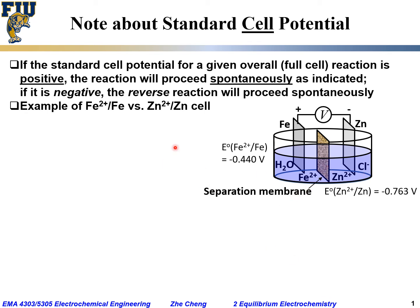We know the standard electrode potential for iron Fe2+/Fe is minus 0.440 volt, while the standard electrode potential for zinc Zn2+/Zn is minus 0.763 volt.